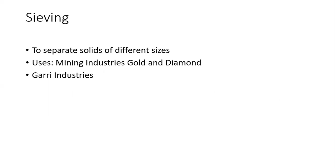Sieving is used to separate solids of different sizes. For example, people who process garri sieve it to separate rock particles from smaller particles. The smaller sizes pass through the sieve and the bigger sizes are disposed of. Sieving is also used in mining industries — for gold and diamonds — to separate impurities.